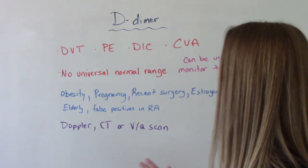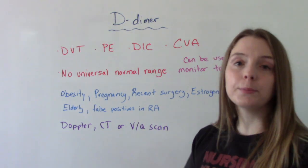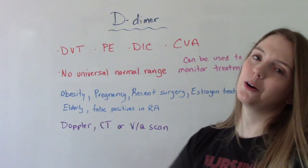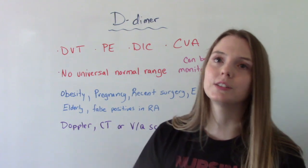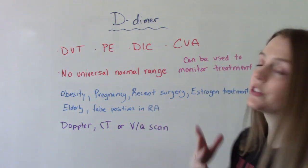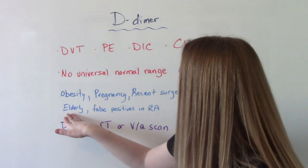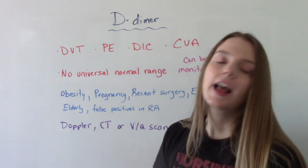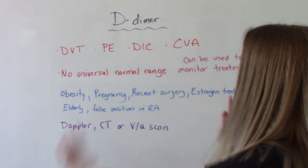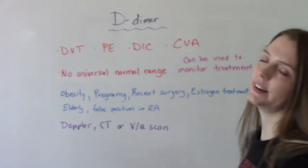A couple of other things to point out: yes, this is for coagulation and clotting disorders, but D-dimer can be elevated in other instances as well. So in obesity, pregnancy — pregnancy is a hypercoagulable state with more blood volume, so it makes sense it would be elevated. If you've recently had surgery or trauma, if you're on estrogen treatment, we tend to see it more elevated in the elderly. And people who have rheumatoid arthritis will often have false positives for this. So even if someone doesn't have a clotting disorder, you might see elevated levels.